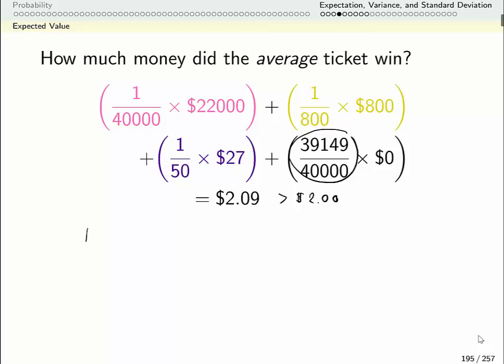So again, the thing we just calculated is the expected value of this random variable. It's a discrete random variable and it was 2.09.